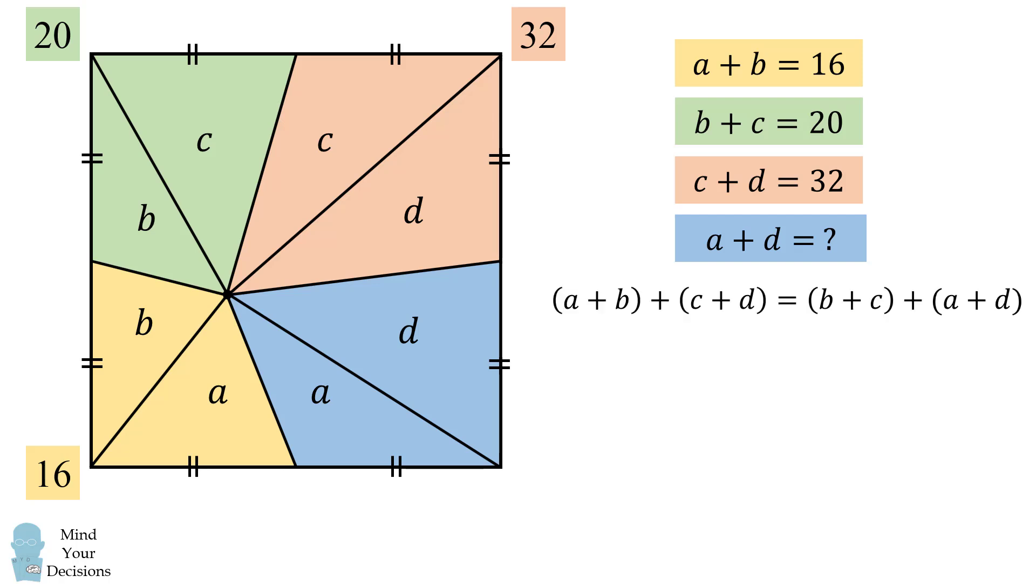Well, notice that the quantity A plus B plus the quantity C plus D is equal to the quantity B plus C plus the quantity A plus D. In other words, the sum of opposite areas are equal.